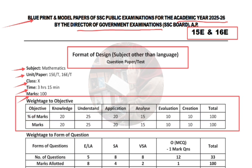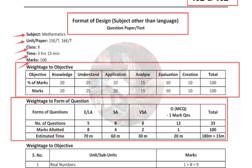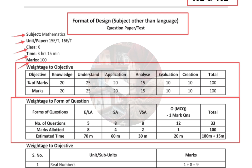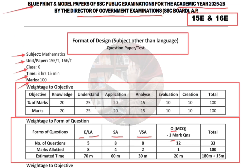The first table is the weightage of objectives, and the second table is the weightage of form of questions. This table gives you a brief knowledge of how the questions will be structured. 'E' stands for essay or long answer questions, 'SA' means short answers, 'VSA' means very short answers, and 'O' means objective type questions. Please refer to this table to understand how many of each question type will appear.